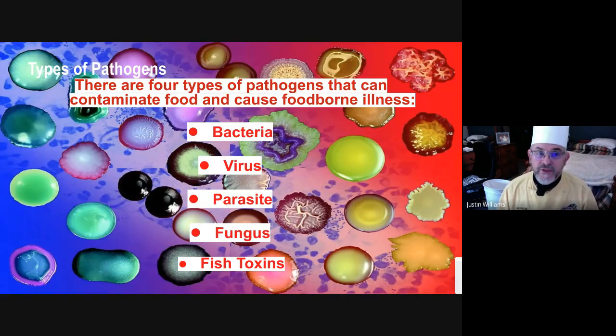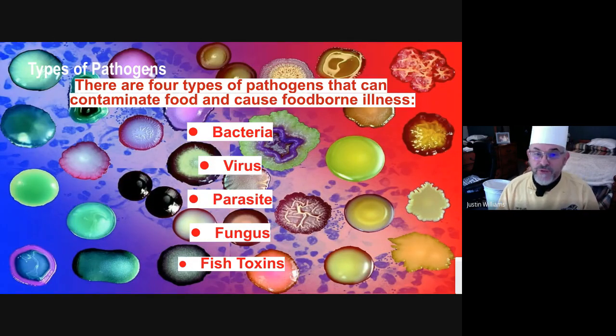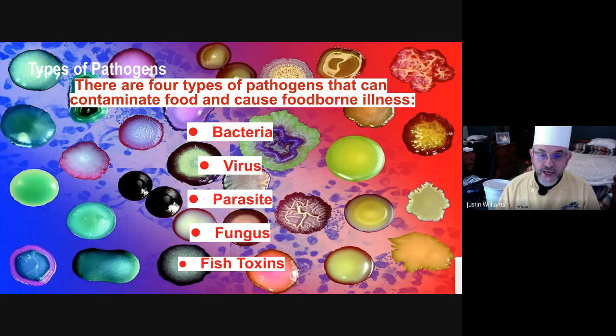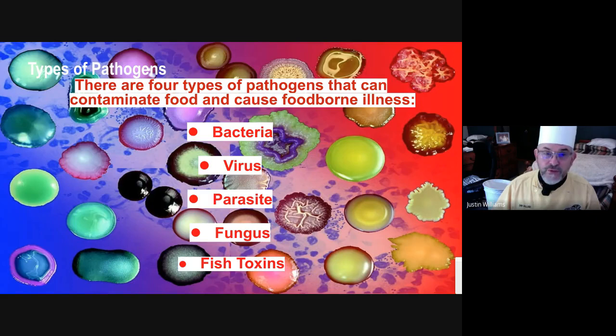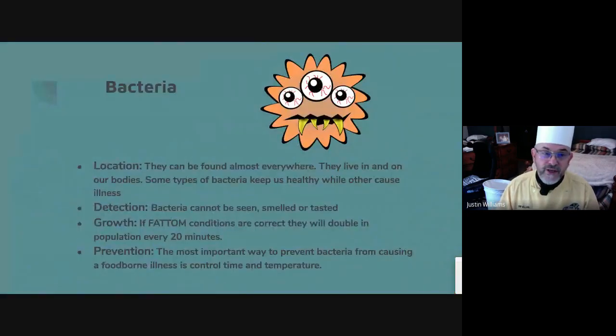There are four different types of pathogens that can contaminate food and cause foodborne illness: bacteria, virus, parasites, fungus, and fish toxins.